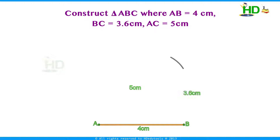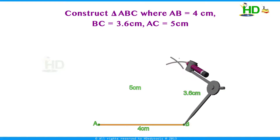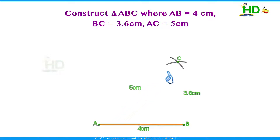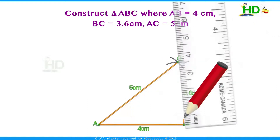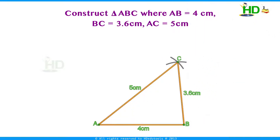Since BC is 3.6 cm, taking B as the center with radius 3.6 cm, draw another arc so that it cuts the first arc. The intersection of these two arcs is point C. This gives AC = 5 cm and BC = 3.6 cm. Now join AC and BC. This is the required triangle ABC with AB = 4 cm, BC = 3.6 cm, and AC = 5 cm.